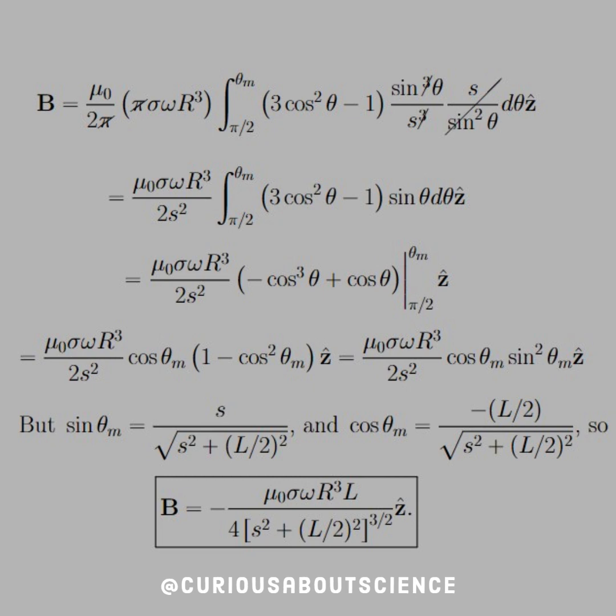And now we just need to evaluate the integral, and we do so as such. Once evaluated, we need to simplify. We see that we can factor and have something of the form where we can substitute in with the Pythagorean identity. And so here we are left with mu naught sigma omega r cubed divided by two s squared, cosine theta m times sine squared theta m in the z hat direction, of course.